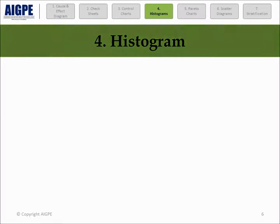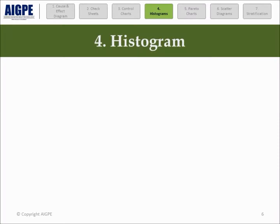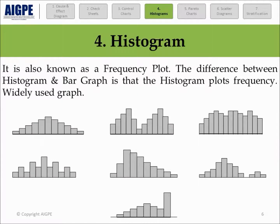A histogram is also known as a frequency plot. It was first developed by Karl Pearson. Histograms are used to identify the probability distribution of continuous data and can only be used for continuous data. While it resembles a bar chart, a bar chart is created from count data whereas a histogram is created from frequency data. Histogram requires limited statistical knowledge.